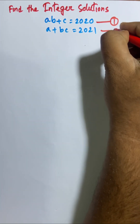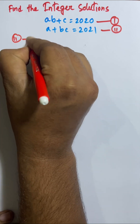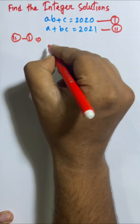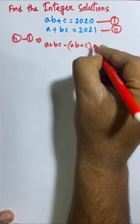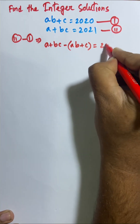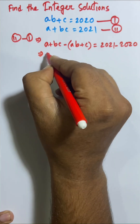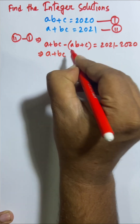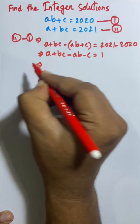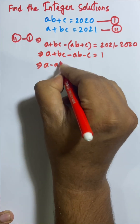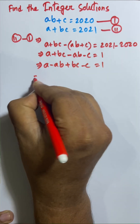First of all, equation 2 minus equation 1 gives: (a plus bc) minus (a plus ab plus ac) equals 2021 minus 2020. So now I can say a plus bc minus ab minus ac is equal to 1. Now I can rearrange: a minus ab plus bc minus c is equal to 1.